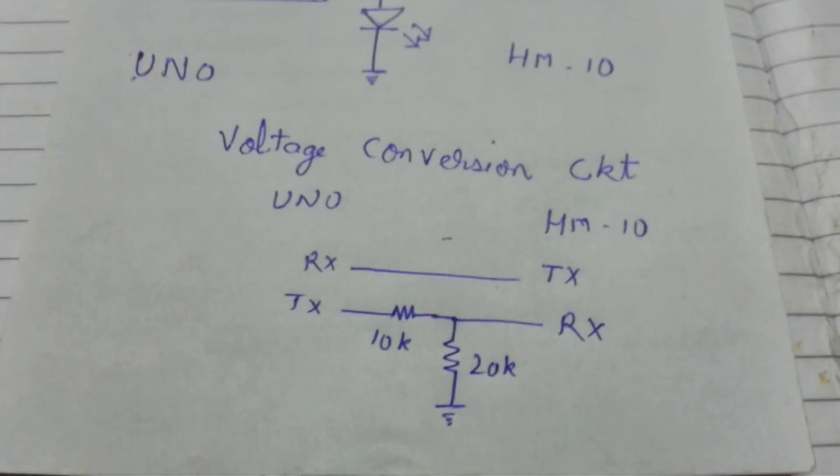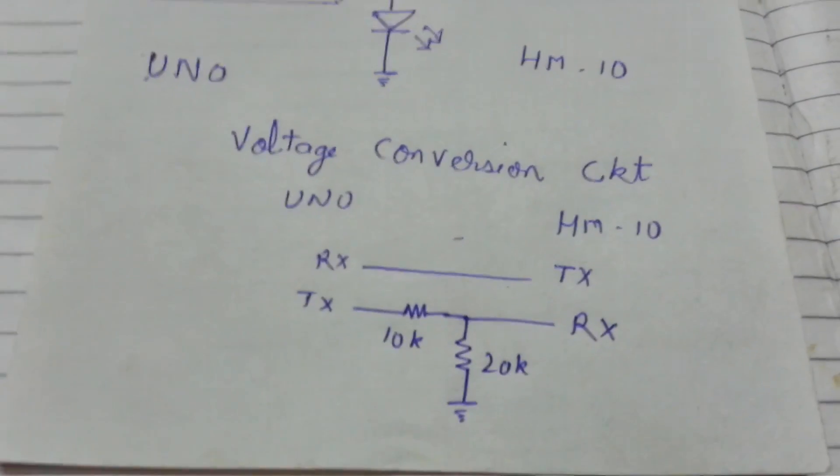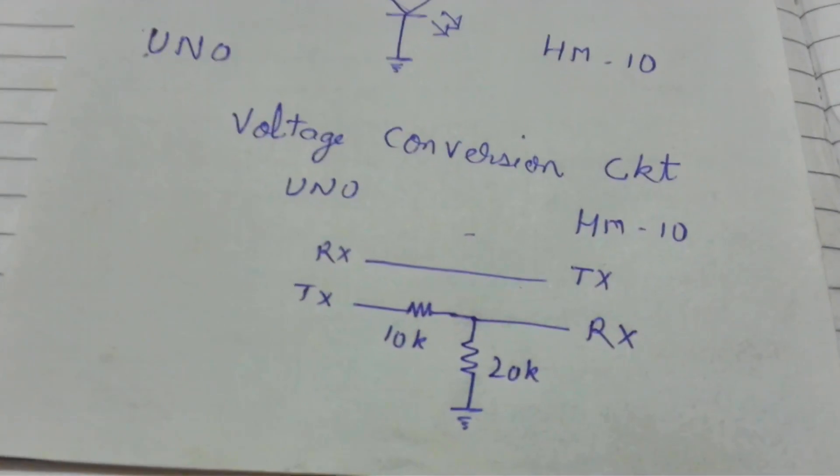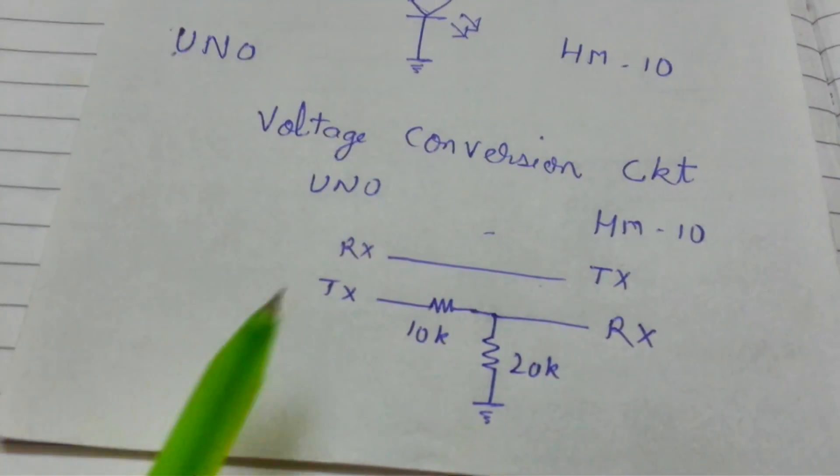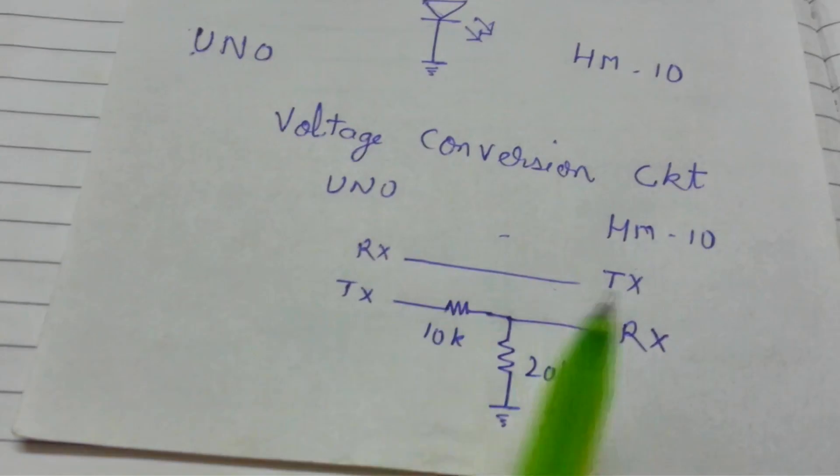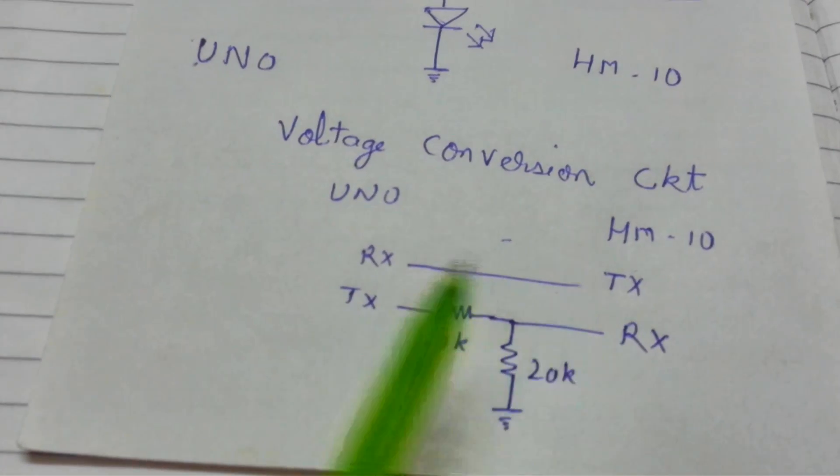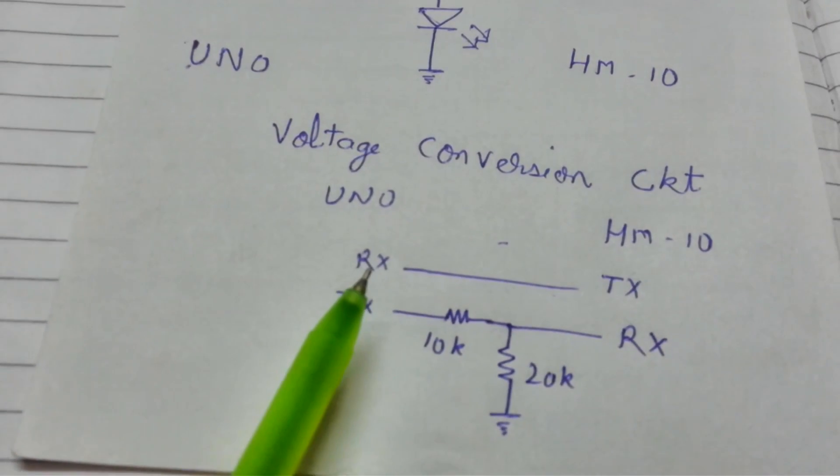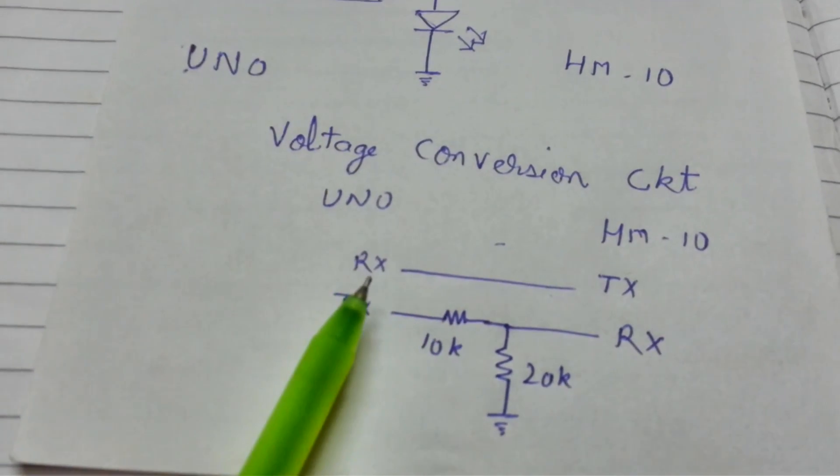We all know that the HM-10 module works on 3.3 volt but the UNO works on 5 volt, so you need to have a voltage conversion circuitry in this manner. The TX from the HM-10 can be directly connected to RX as the 3.3 volt will still be considered as logic level 1.